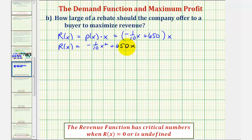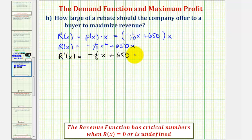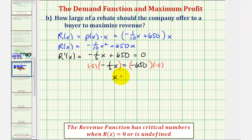To maximize the revenue, we'll begin by determining the critical numbers, where the first derivative is equal to zero or undefined. R prime of X equals negative one-fifth X plus 650. This is never undefined, so to find the only critical number we set this equal to zero and solve. Subtracting 650 on both sides gives negative one-fifth X equals negative 650. Multiplying both sides by negative five gives us X equals 3,250.